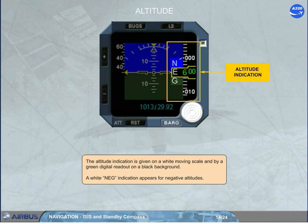The altitude indication is given on a white moving scale and by a green digital readout on a black background. A white NEG indication appears for negative altitudes.